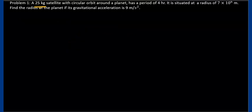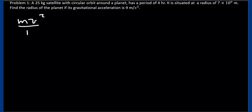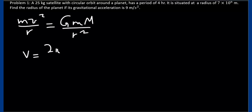Let's do a problem. A 25 kg satellite in a circular orbit around a planet has a period of 4 hours and is at a radius of 7 times 10 to the power 6 meters. Find the radius of the planet if the gravitational acceleration on its surface is 9 meters per second squared. The force equation gives m times v squared over r equals G times m times M over r squared. Note that the mass of the satellite cancels, so it does not matter.